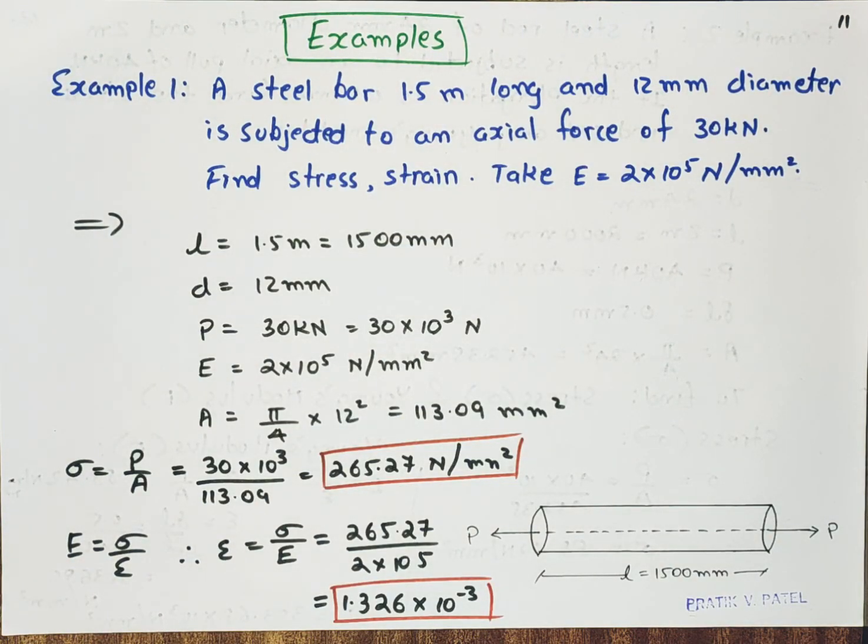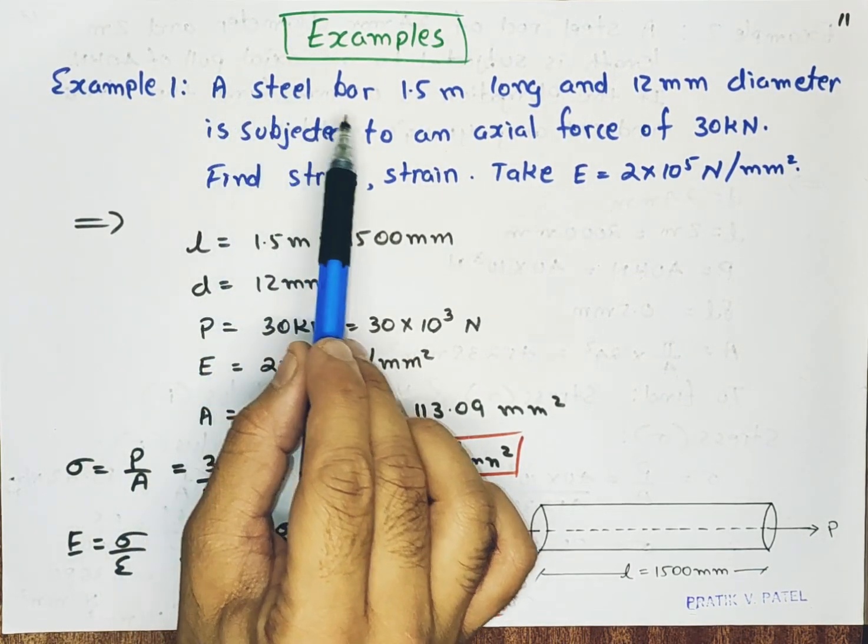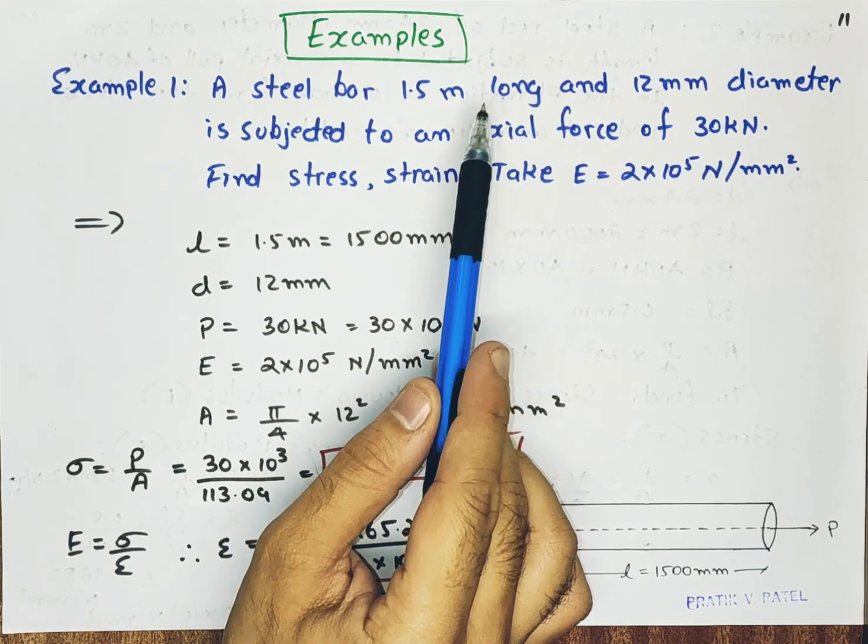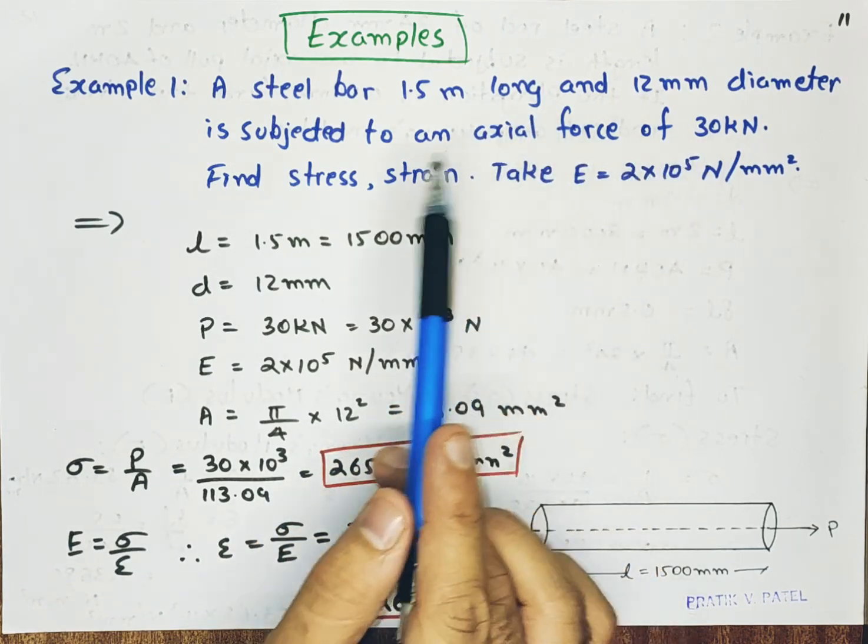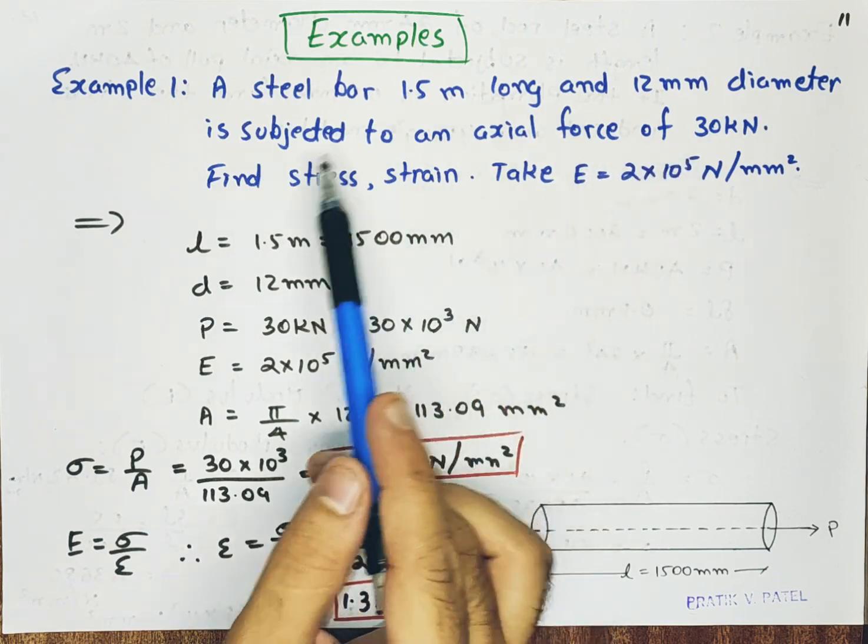So today we will be solving example number 1. A steel bar of 1.5 meter long and 12 mm diameter is subjected to an axial force of 30 kilo newton.